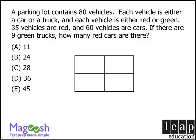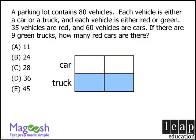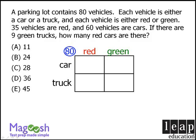So let's begin. One feature here is vehicle type, so we're going to reserve the two boxes in the top row for cars and the two boxes in the bottom row for trucks. The other feature is color, so we'll reserve the two boxes in the left-hand column for red vehicles and the two boxes in the right-hand column for green vehicles. The question tells us that we have 80 vehicles in total, so we'll place that information here. Our ultimate goal will be to place each of our 80 vehicles in one of the four boxes, depending on each vehicle's characteristics.